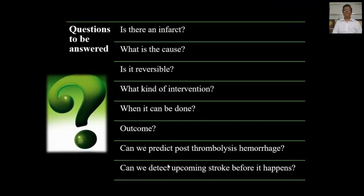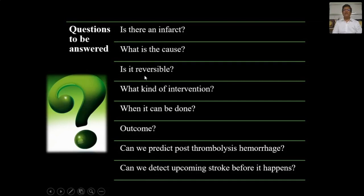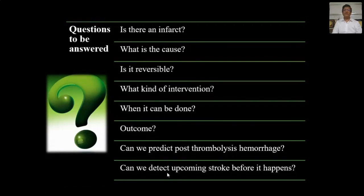When we image a patient with hyperacute stroke, there are about 8 questions we need to answer. First: when a patient has focal neurological deficit, is there an infarct? If there is an infarct, what is the cause? Is it reversible or not? What kind of intervention would be useful? When can it be done? What is the outcome of thrombolytic therapy? Can we predict post-thrombolysis hemorrhage? And can we detect an upcoming stroke before it happens in high-risk patients?